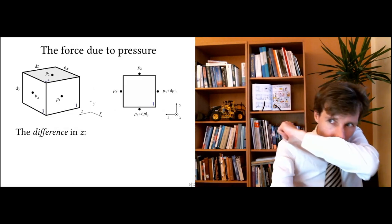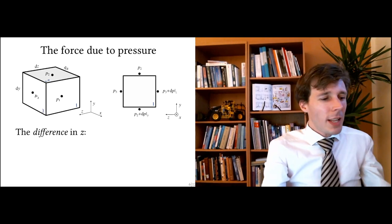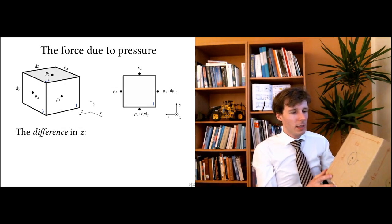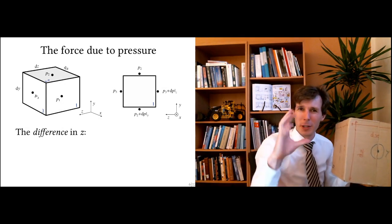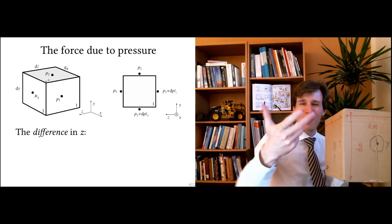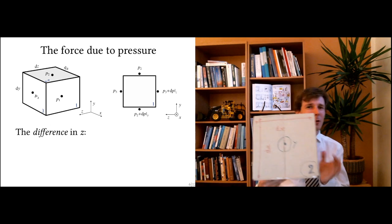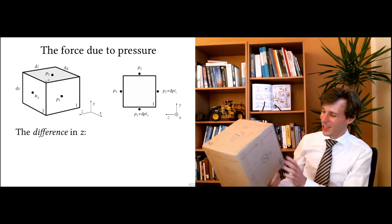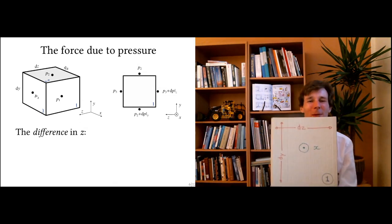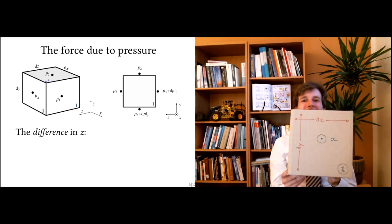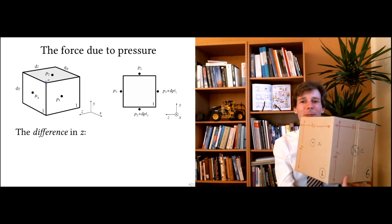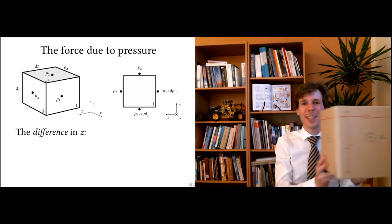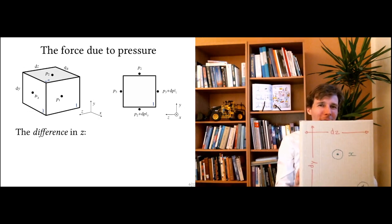Let's compute this field by looking at the z direction. A really advanced teacher would have a 3D animation or holographic display, but I just have a cardboard box — it serves my purpose pretty well. So we have a cube: this is side number one, here is side number six, and on the other side is side number three. We are looking at the z direction, and we want to compute how much pressure is pushing in that direction.